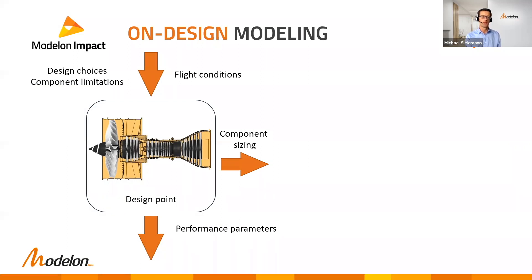Modelon Impact as a platform enables additional workflows. I'd like to introduce one early design workflow that builds on on-design modeling, which is different from typical Modelica modeling. Rather than entering all component sizing parameterization as inputs and computing performance, the sizing and parameterization of components is actually an output. We prescribe component-level and system-level assumptions such as pressure ratios and shaft speeds, then generate a consistent design at a specific operating condition called the design point.